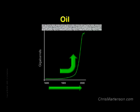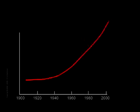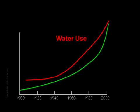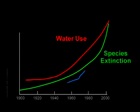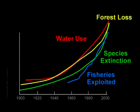Here's the US money supply, which has been compounding at incredible rates ranging between 5 and 18% per year, so this chart only needs to be a few decades long to see this hockey stick effect. And here's worldwide water use, species extinction, fisheries exploited, and forest cover lost. Each one of these is a finite resource, as are many other critical resources, and quite a few are approaching their limits.